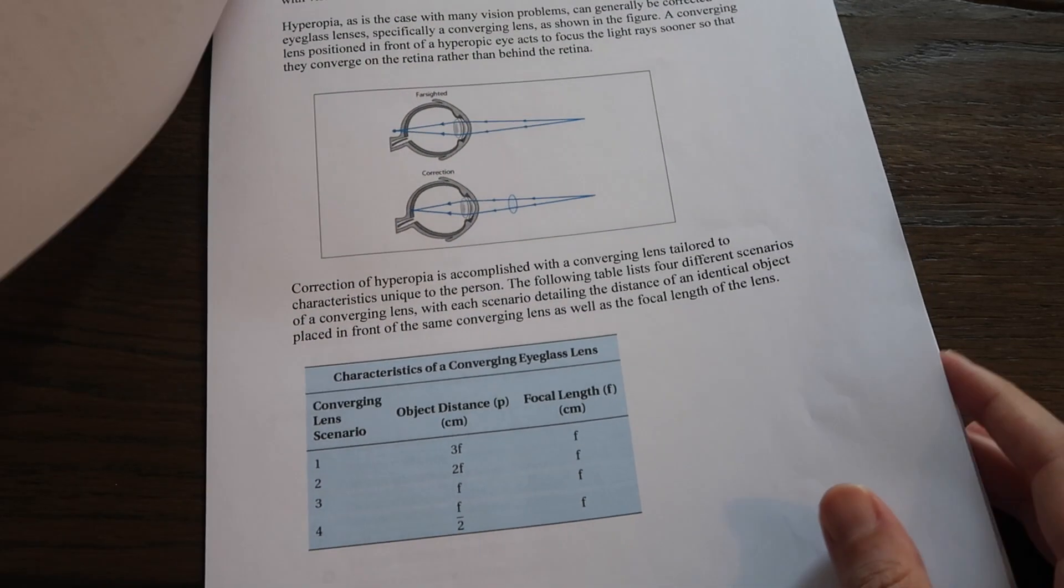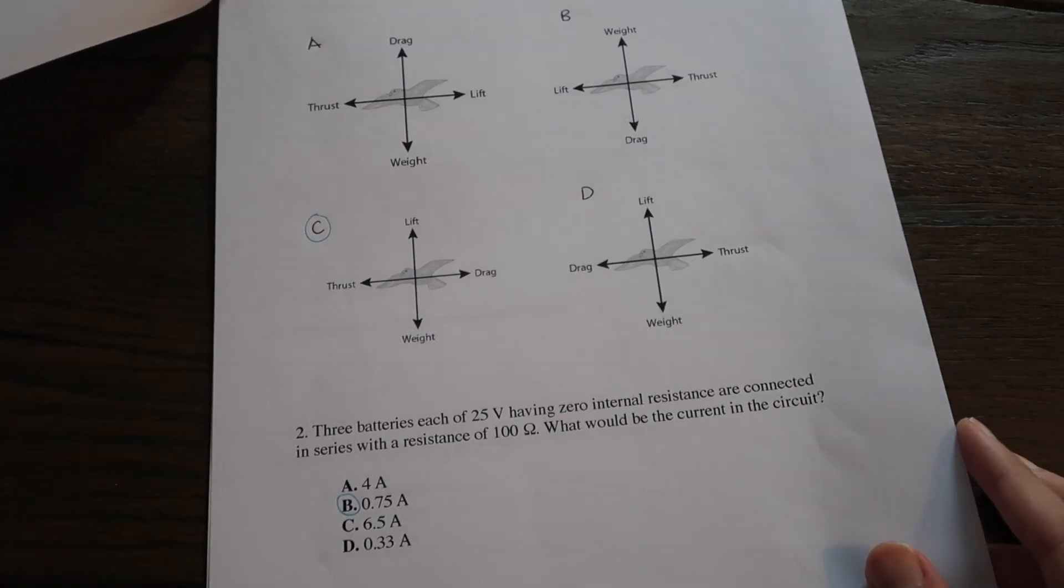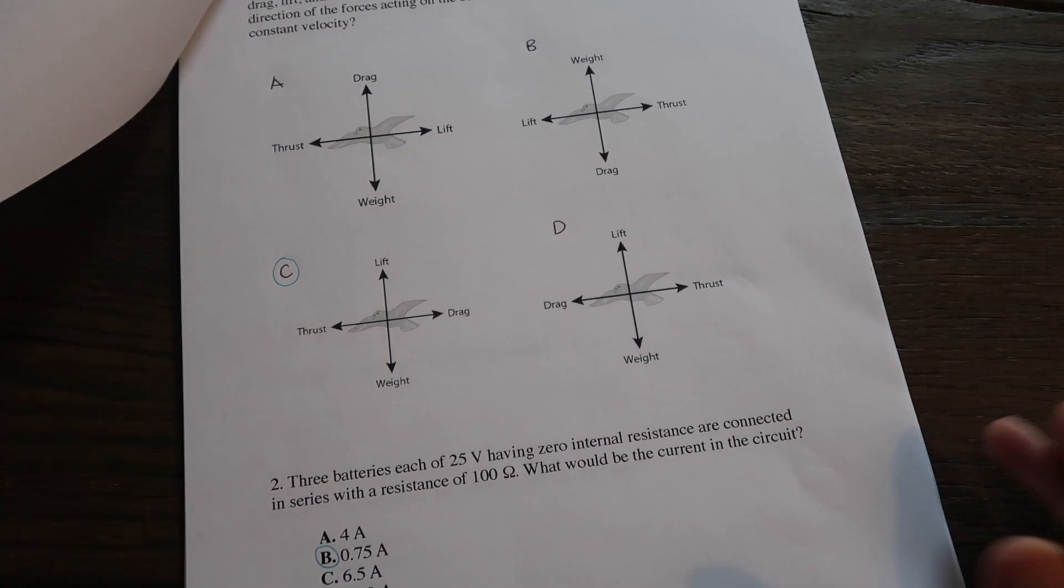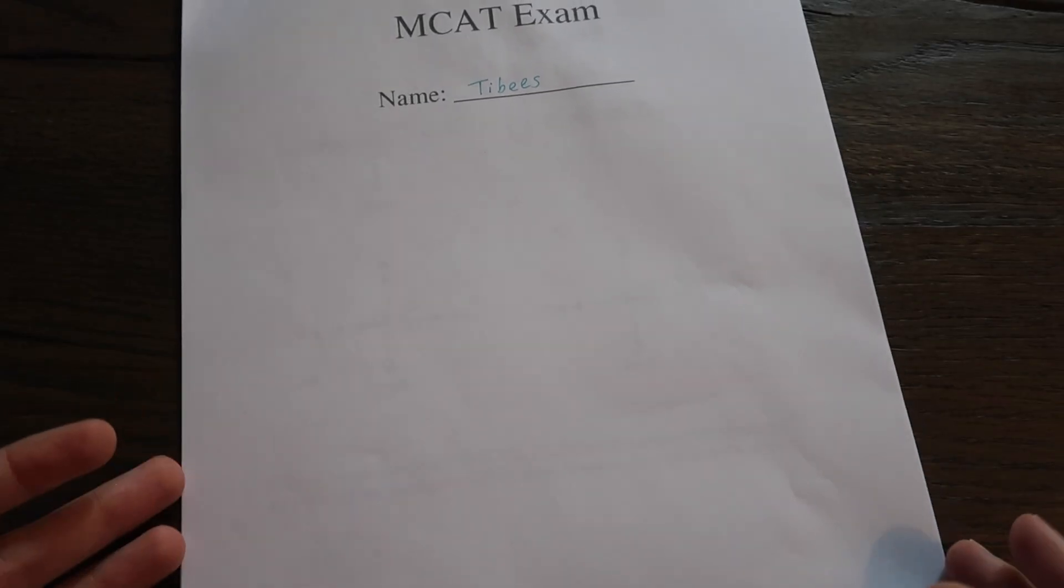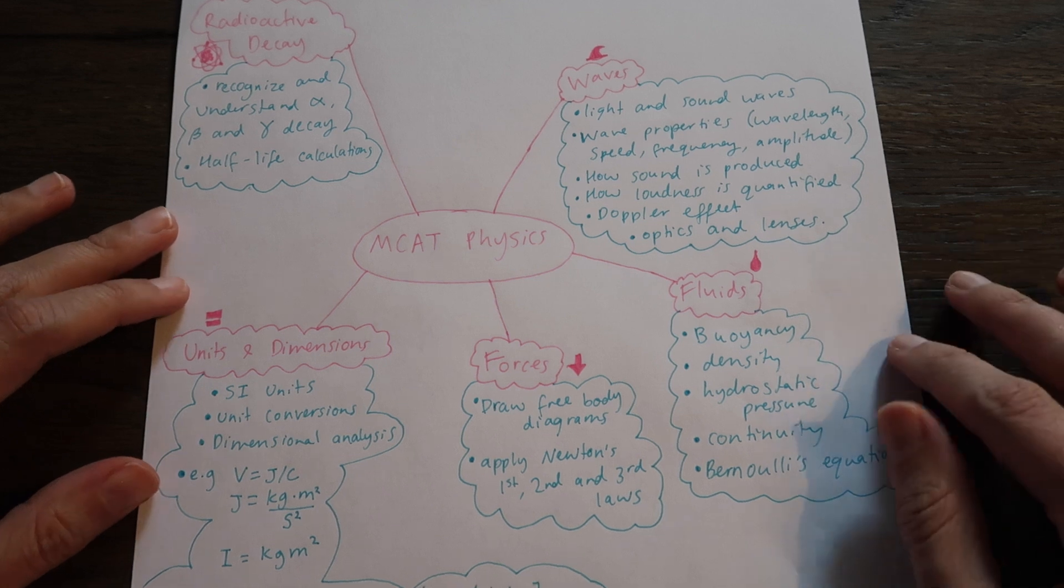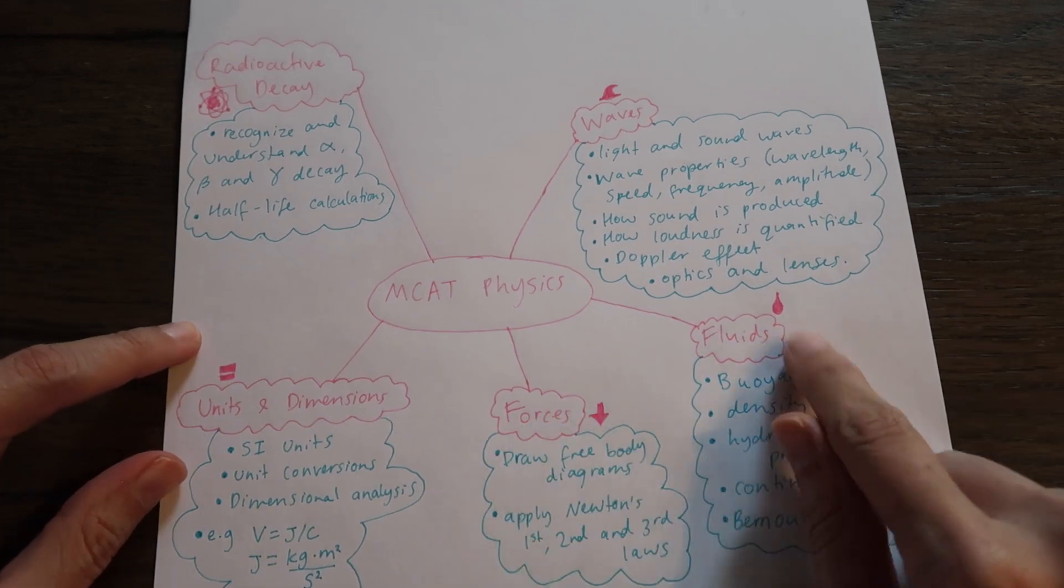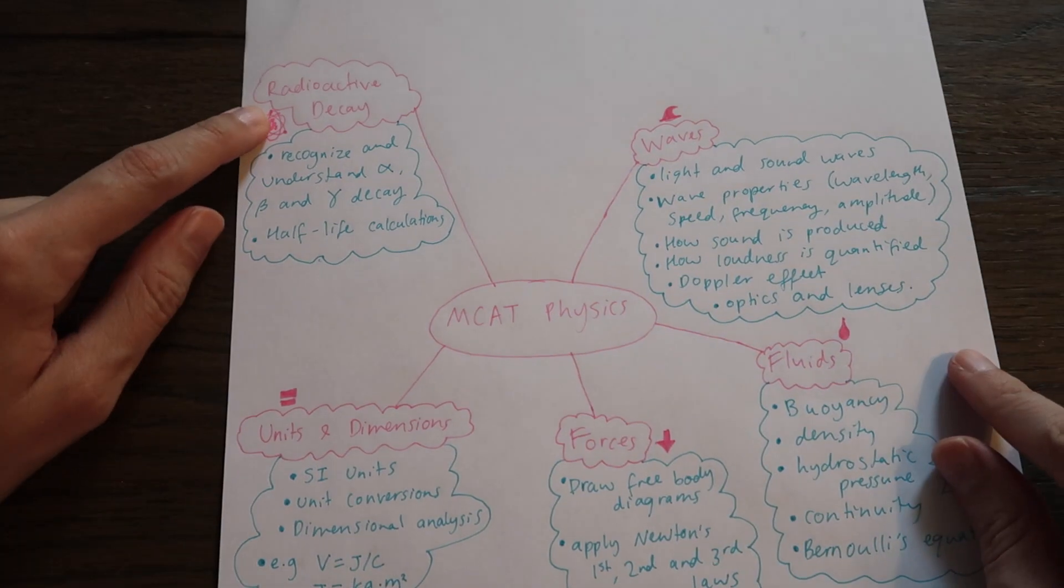So really to prepare for the physics that's in this MCAT I don't think it's going to be too much different from how you would prepare to pass maybe a first year physics exam. From looking at this exam you might see these five key areas of physics emerging: we've got units and dimensions, forces, fluids, waves and radioactive decay.